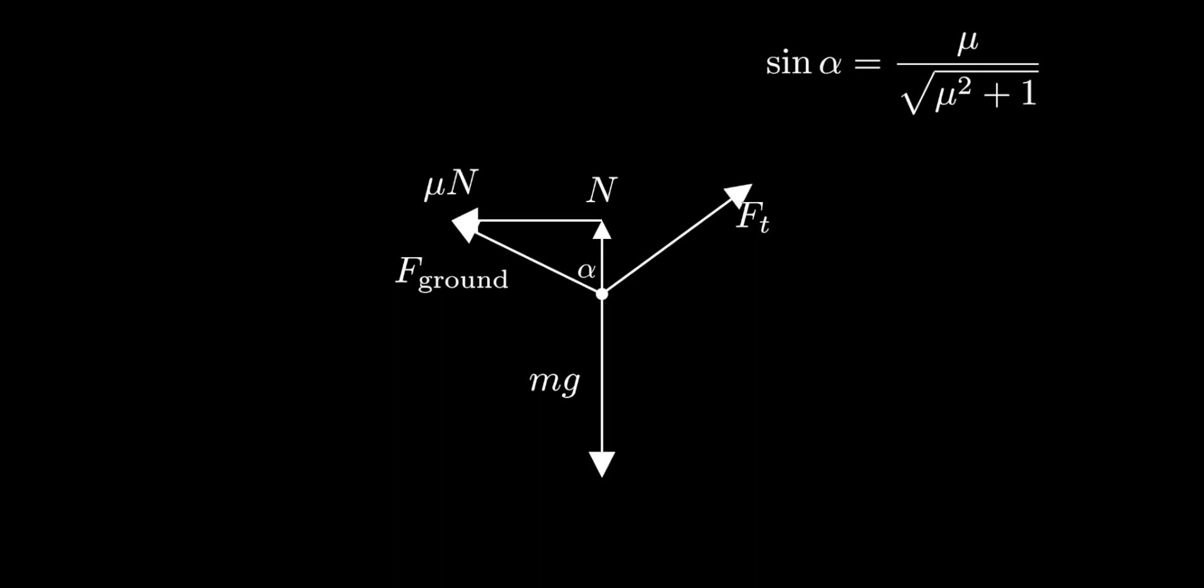Now we can clean up the picture a bit. We want to reduce the problem such that there are only two forces, so we want to combine the tension force and the gravitational force together. When an object experiencing only two forces is in equilibrium, these two forces must act in opposite directions. In other words, the force of tension, once added to mg, must lie on the diagonal dotted line.